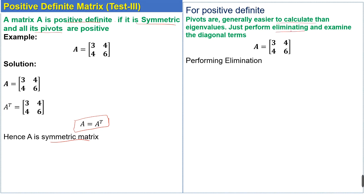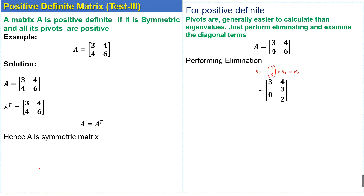We perform elimination to eliminate the terms below the pivot coefficient. In this case the pivot coefficient is 3, so the term below the pivot — which is 4 — needs to be eliminated. We multiply row 1 by 4/3 and subtract it from row 2 to get a new row R2-dash. After performing the elimination we obtain the new matrix.